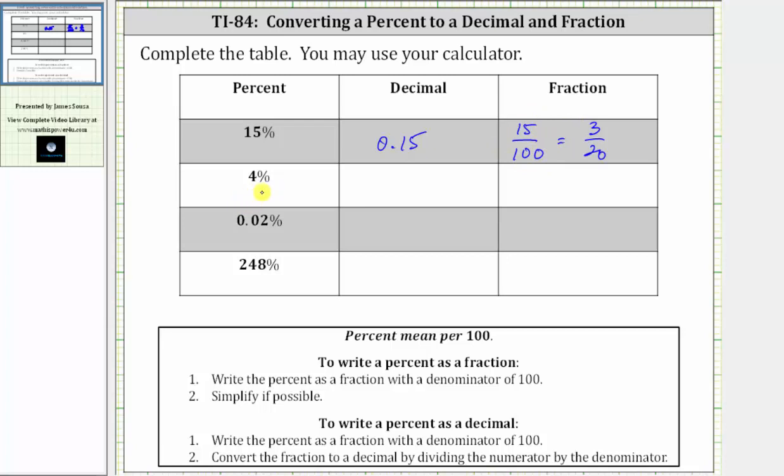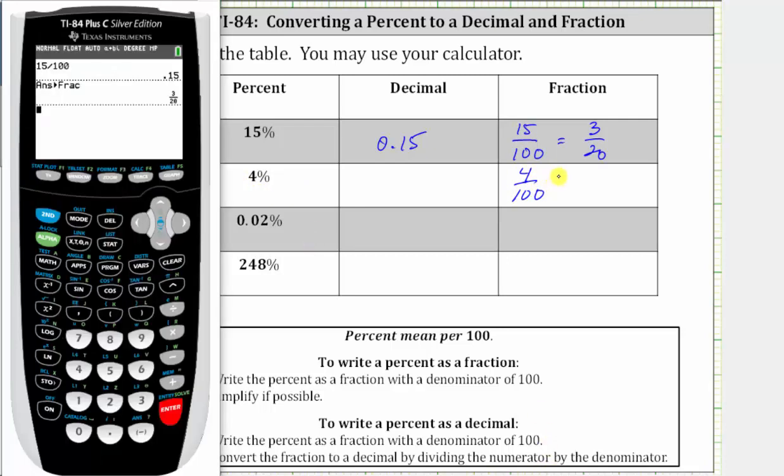Next, we have 4%, which means 4 per 100. As a fraction, we have 4 over 100. Going back to the TI-84, to find the decimal, we enter 4 divided by 100, enter, which gives us 0.04.